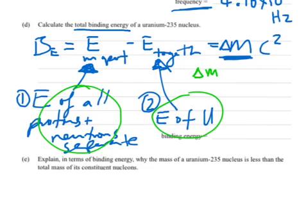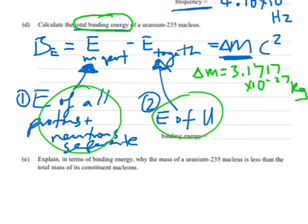I'll just write it in like this, change of mass, or the mass deficit, it's going to be 3.171, 1.7, times 10 to the minus 27 kilograms, and then you just multiply it by the speed of light squared, and that's going to give you the total binding energy. If you wanted the binding energy per nucleon, then you would have to divide that total energy, divided by the number of, which is 235, the number of nucleons.